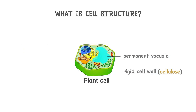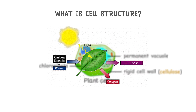And last but not least, chloroplasts — the green machines where photosynthesis happens. Chlorophyll, the green pigment inside chloroplasts, absorbs sunlight for the process of turning sunlight into glucose. And that is the reason why plant leaves are actually green.